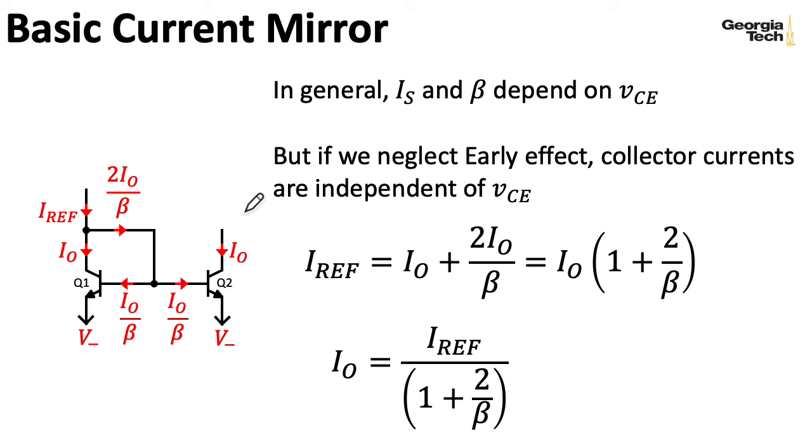And there's all kinds of other games you can play with current mirrors. You can take structures like this and stack them on top of each other to form a cascode configuration that will give you a very high output impedance. You can also play games where you take the output part of the structure and make copies of it to create copies of the current. That can be very useful. You can also take different combinations of BJTs in parallel, or play sizing games in an integrated circuit design, particularly with MOSFETs to create current gain or current attenuation. There's all kinds of things you can do. In this series of lectures, I just wanted to give you a few of the concepts.